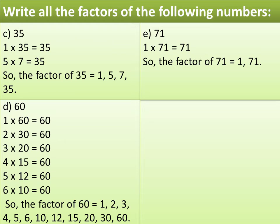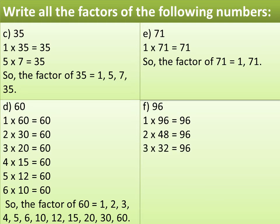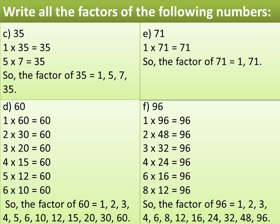Find all the factors of 96. We have to think of all possible combinations of 96. Start with 1: 1 multiplied by 96 equals 96. It can also be written as 2 multiplied by 48 equals 96, and 3 multiplied by 32 equals 96, and 4 multiplied by 24 equals 96. Are there any more combinations? Yes: 6 multiplied by 16 equals 96, and 8 multiplied by 12 equals 96. There is no other product of two numbers that results in 96. So the factors of 96 are 1, 2, 3, 4, 6, 8, 12, 16, 24, 32, 48, and 96.